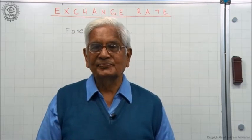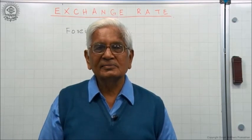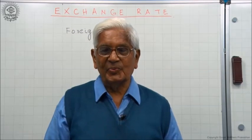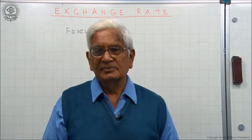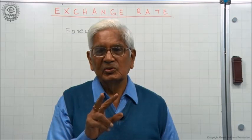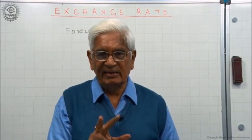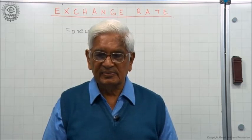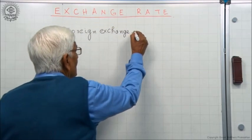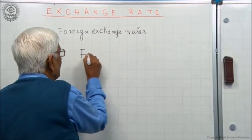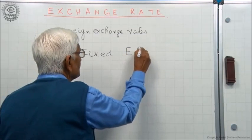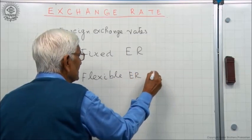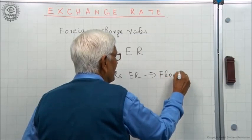How is this rate determined? If you want 1 dollar you have to pay 65 rupees — but who decides that you have to pay 65 rupees? Broadly there are 2 types of exchange rates in the world. One is called fixed exchange rate, and the other is called flexible exchange rate, also called floating exchange rate.